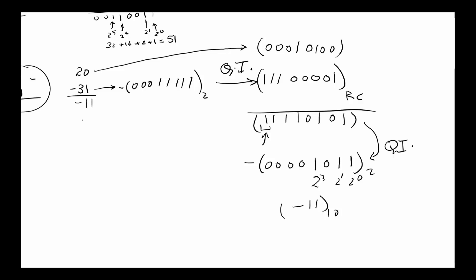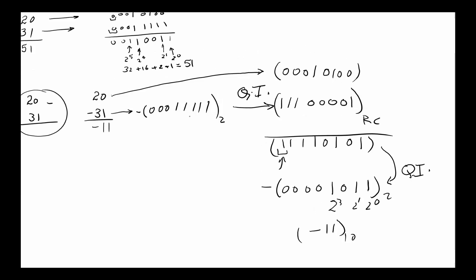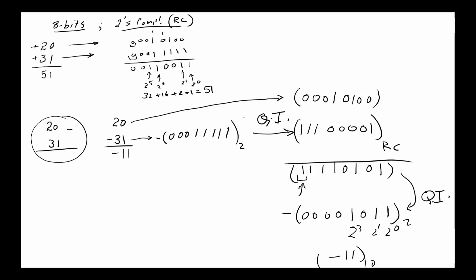And sure enough, minus 11 is the right answer. So you notice that once I know how to do addition and once I know how to do 2's complement, the process is the same. Addition is exactly like subtraction. All I have to do is make sure that what I'm going to subtract is in 2's complement, so it's a negative number.